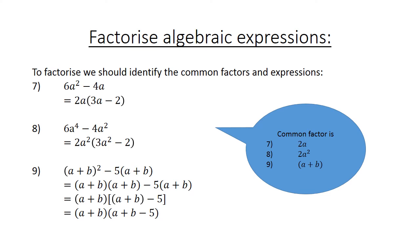And we can simplify: (a plus b) is the common factor, and in brackets (a plus b minus 5). Number 7: 2a is the common factor. Number 8: 2a to the power of 2. And number 9: in brackets (a plus b).